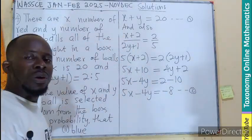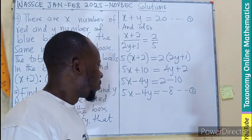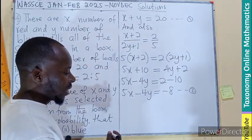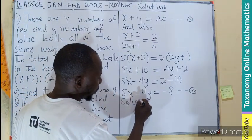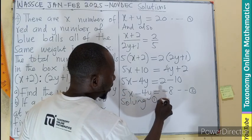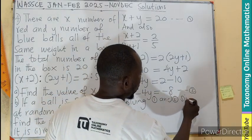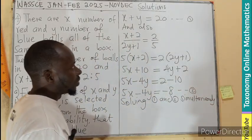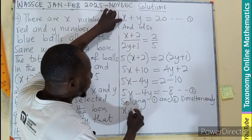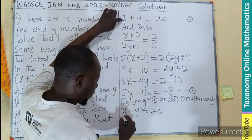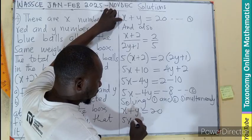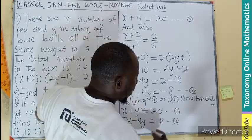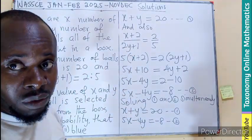So 5X minus 4Y equals negative 8. This is also an equation with two unknown variables, which is equation 2. So we need to solve the two equations simultaneously — equation 1: X plus Y equals 20, and equation 2: 5X minus 4Y equals negative 8. We can do substitution or elimination.